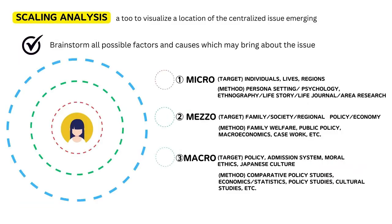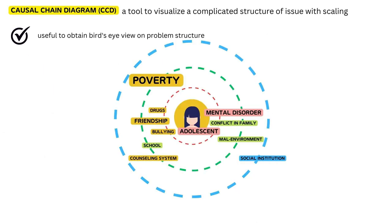We have brainstormed the causal chain. Next, we will introduce the scaling analysis to it. The scale consists of three phases: micro, meso, and macro. These three phases can flexibly shrink and extend depending on the knowledge and perspectives of the researcher's mind. For instance, in the case of drug abuse, strong stress and mental illness is quite a personal problem, so we can put this factor in micro — the closest position to the persona.